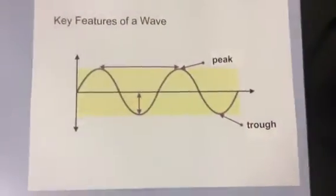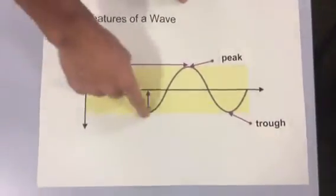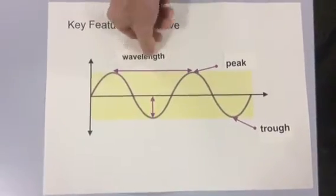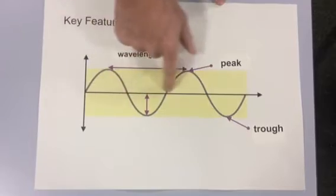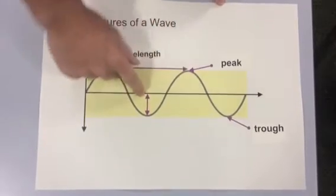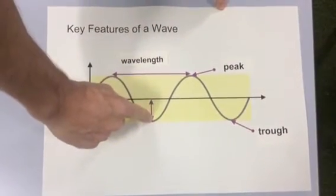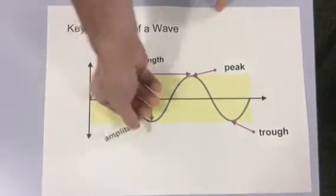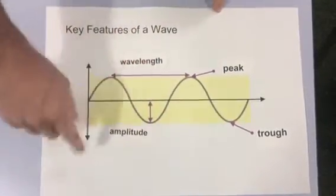I just want to remind you about the properties or the key features of a wave. We've got this, which is from peak to peak. This is called the wavelength. And then we've got from this position here, the zero position when the wave's got no energy, to the trough here, that is called the amplitude. We can also measure it the other way to the peak if we wanted to.